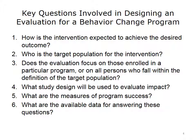What are some of the key issues when evaluating a behavior change model? First, how is the intervention expected to achieve its outcome? We can look at process issues. Who is the target population? Occasionally we'll make an intervention that helps some people, but may not be the people we intended to benefit. Does the evaluation focus on those enrolled in the program? Sometimes it's difficult to maintain contact with the target population. What studies will be used to evaluate impacts — will we survey individuals, allow self-reporting, or use objective measures?